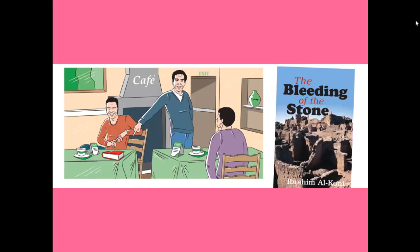Look at these two pictures — the first one on the right and the second one on the left. Where are these people sitting? Yes, they are sitting in a café. What are they doing? The man who isn't dressed in red has a book on his table, whereas the man in blue doesn't have a book in front of him. On the right we have the title 'The Bleeding of the Stone' by Ibrahim Al-Khani.